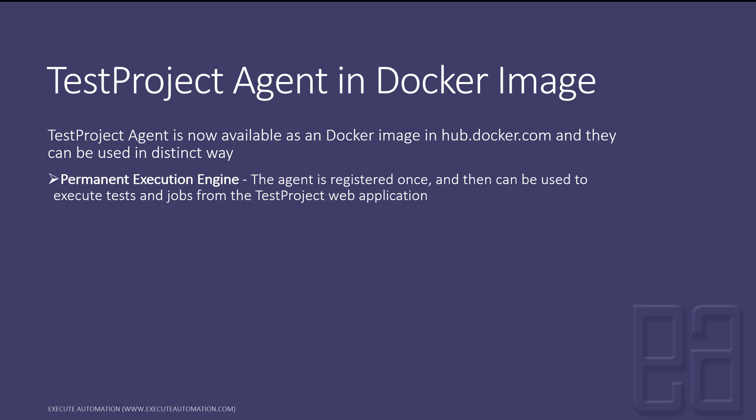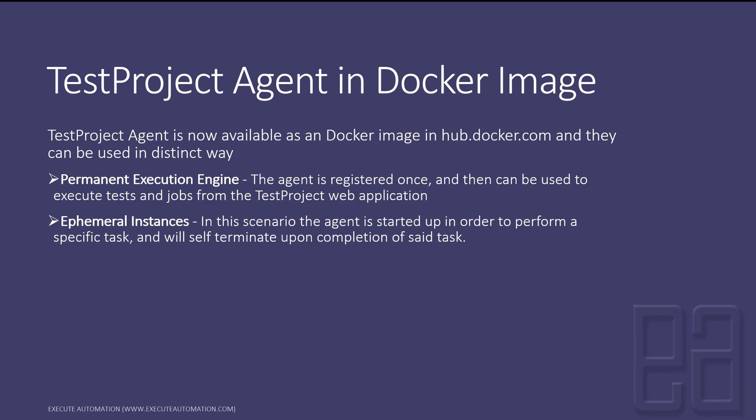The next option is using the ephemeral instance, where the agent is started up in order to perform a specific task and will self-terminate upon completion of that task. This is really cool because you don't have to keep your test project agent running in the background. These instances are very powerful when executing tests on Azure DevOps, Azure Cloud, or within Kubernetes infrastructure where you need to run a test and then destroy it once execution is complete.